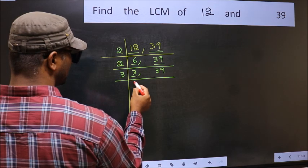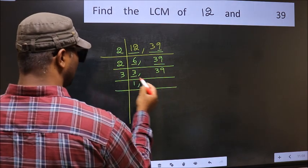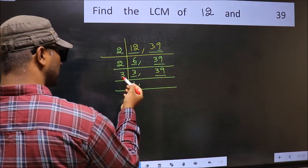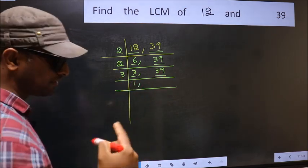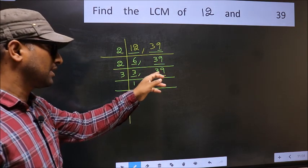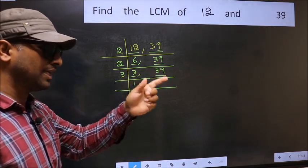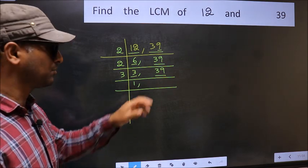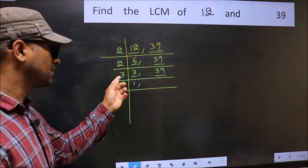3 is a prime number. So 3 goes into 3. The other number 39. To check whether 39 is divisible by 3 or not, add the digits: 3 plus 9. We get 12, and 12 is divisible by 3. So this number is also divisible by 3.